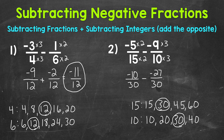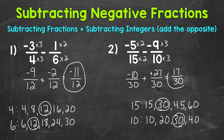Just like when we subtract positive and negative integers, we can add the opposite. The opposite of negative 27 thirtieths is positive 27 thirtieths. So we add negative 10 plus positive 27, which equals positive 17. We keep our denominator of 30. The only common factor between 17 and 30 is one, so this is in simplest form. Our answer is 17 thirtieths.